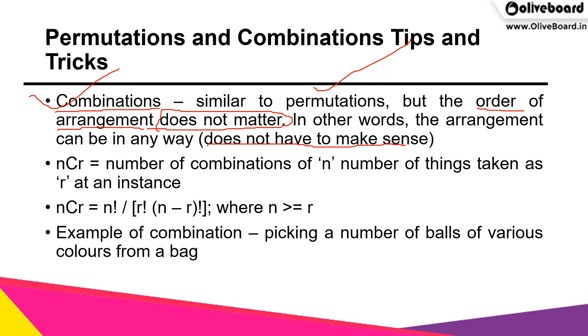For permutations we had nPr; for combinations we have nCr. nCr is the number of combinations of n things taken as r at one instance. It means I can arrange n things in r ways such that their arrangement does not make sense - the order does not have to make a difference.